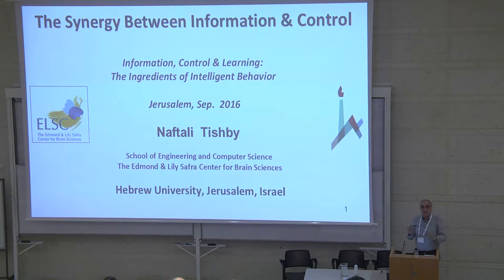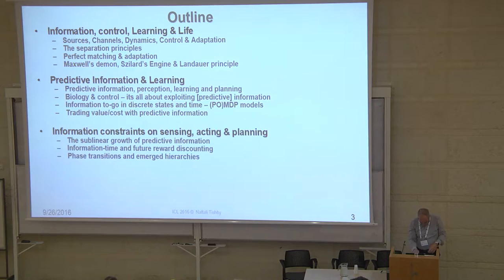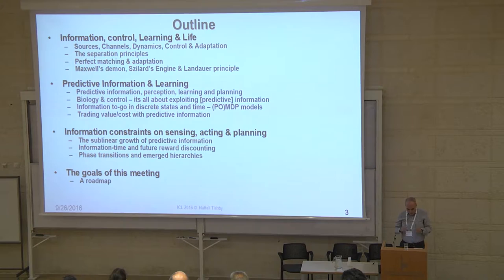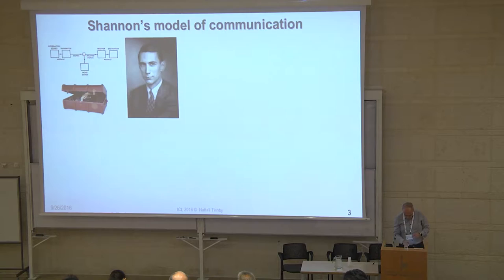I'm going to attempt to give an introduction to those who don't know what we're talking about, while still bringing my own views of the issue. The talk has essentially three parts, and as all of you know, I never get to the end of my talks. I'll start by combining information and control, reviewing Shannon theory in somewhat new light, and then connect it to fundamental questions of control through something I call predictive information.